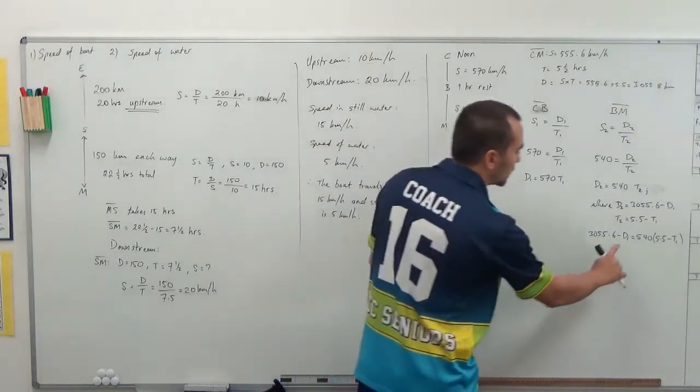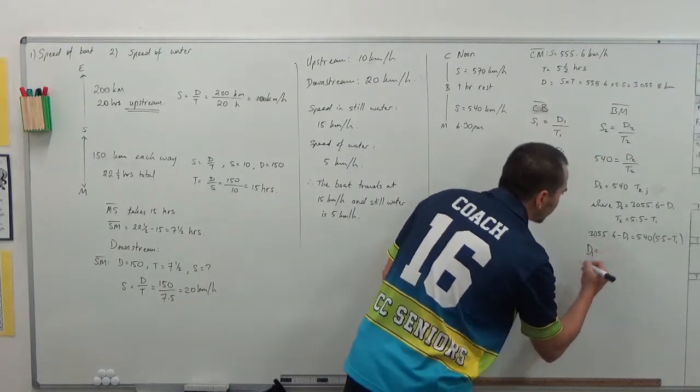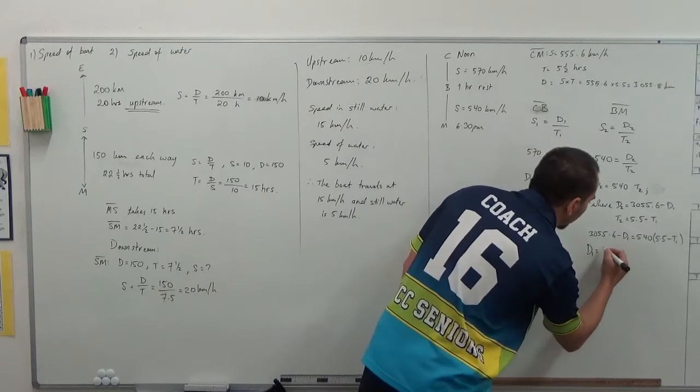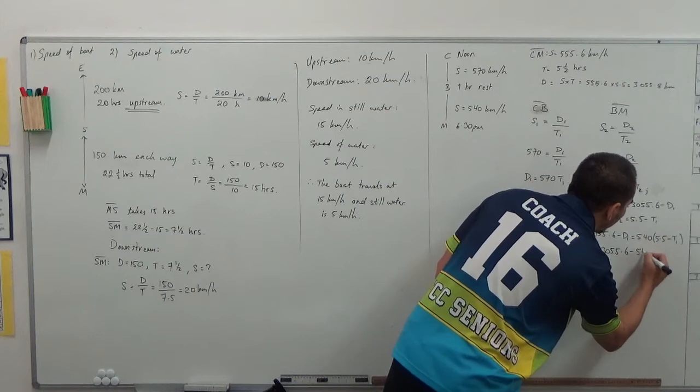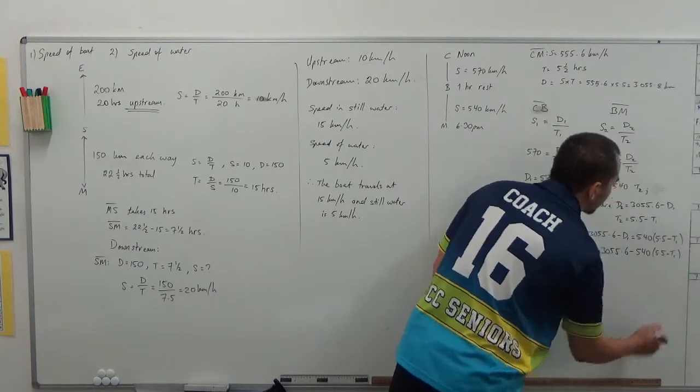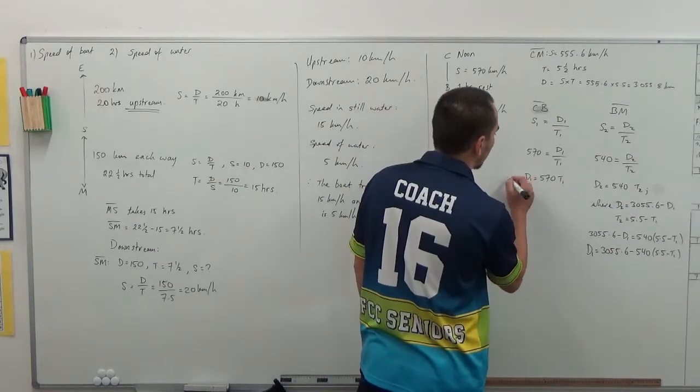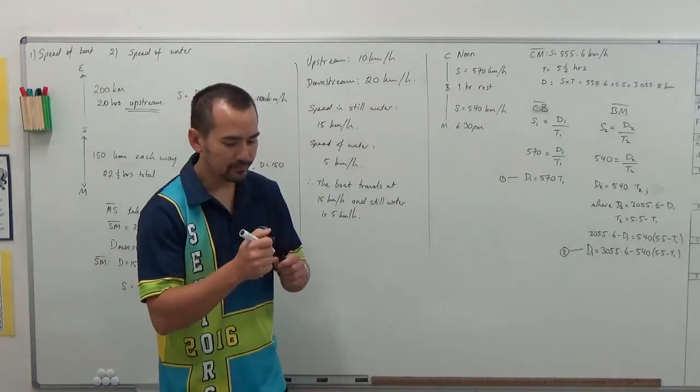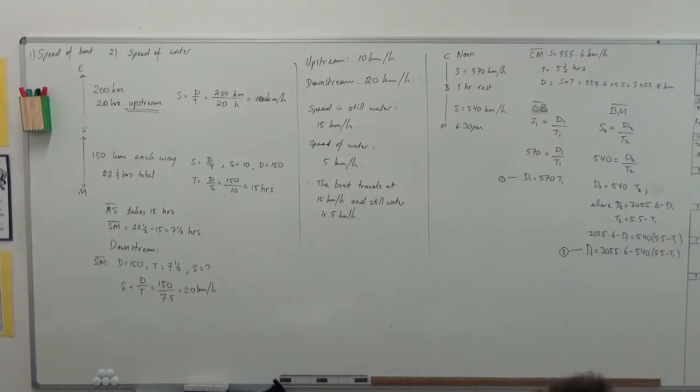So, I need to do a little bit of rearranging here to make D1 the subject. Still got two variables. And I get 3055.6 take away 540 times 5.5 take away T1. So, we'll call this one equation one, and we'll call this one equation two. Close it right there. That's wrong. Here we go.